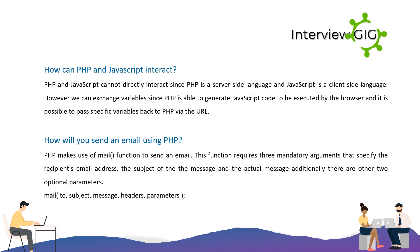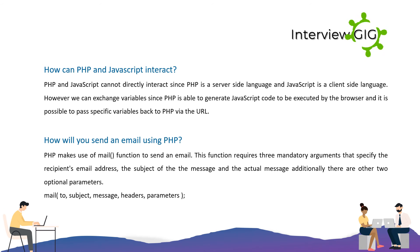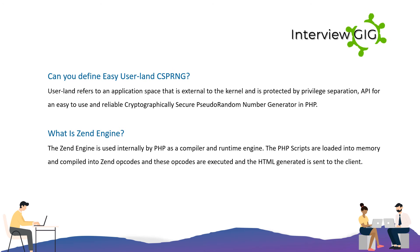How will you send an email using PHP? PHP makes use of the mail() function to send an email. This function requires three mandatory arguments that specify the recipient's email address, the subject of the message, and the actual message. Additionally, there are two optional parameters. The syntax is: mail(to, subject, message, headers, parameters).